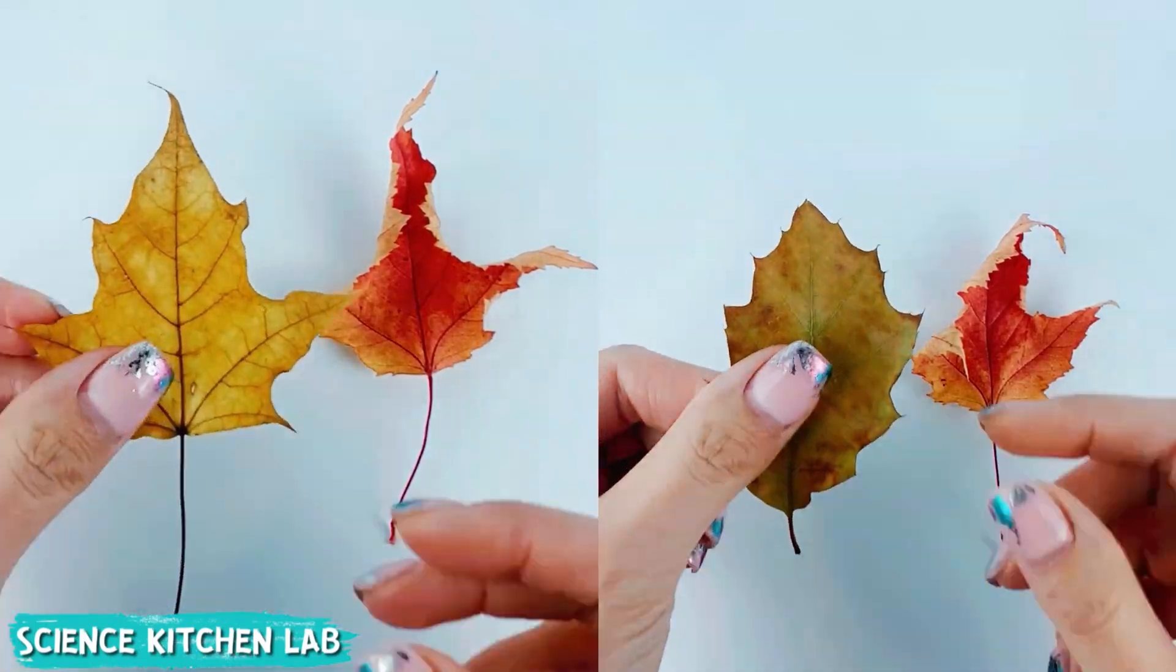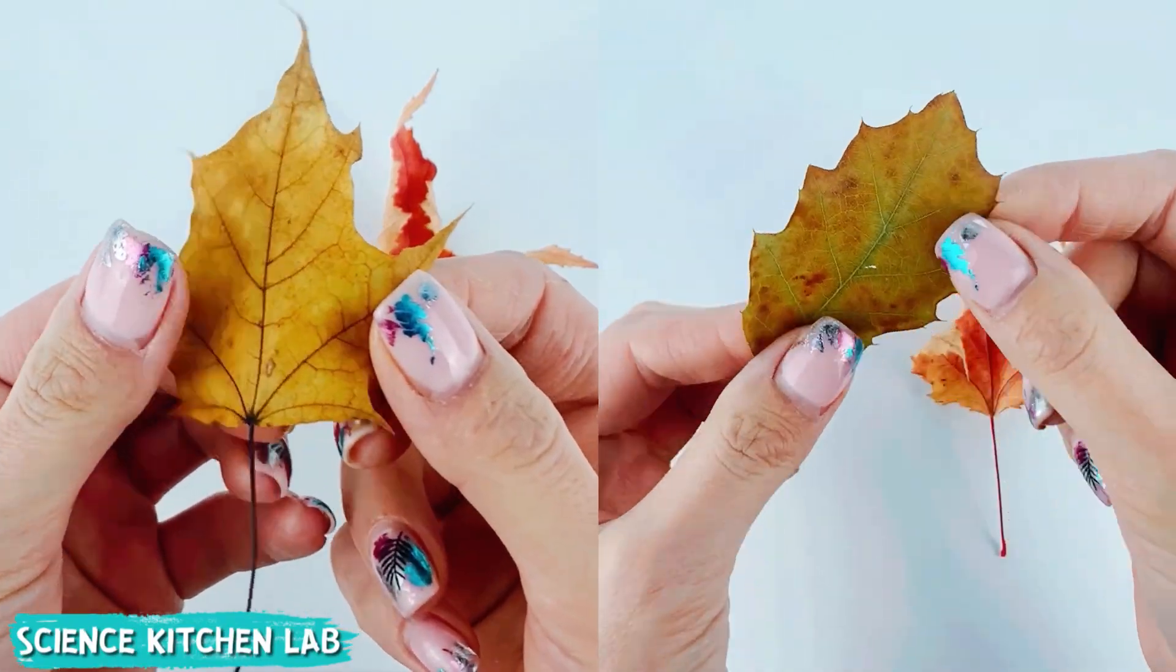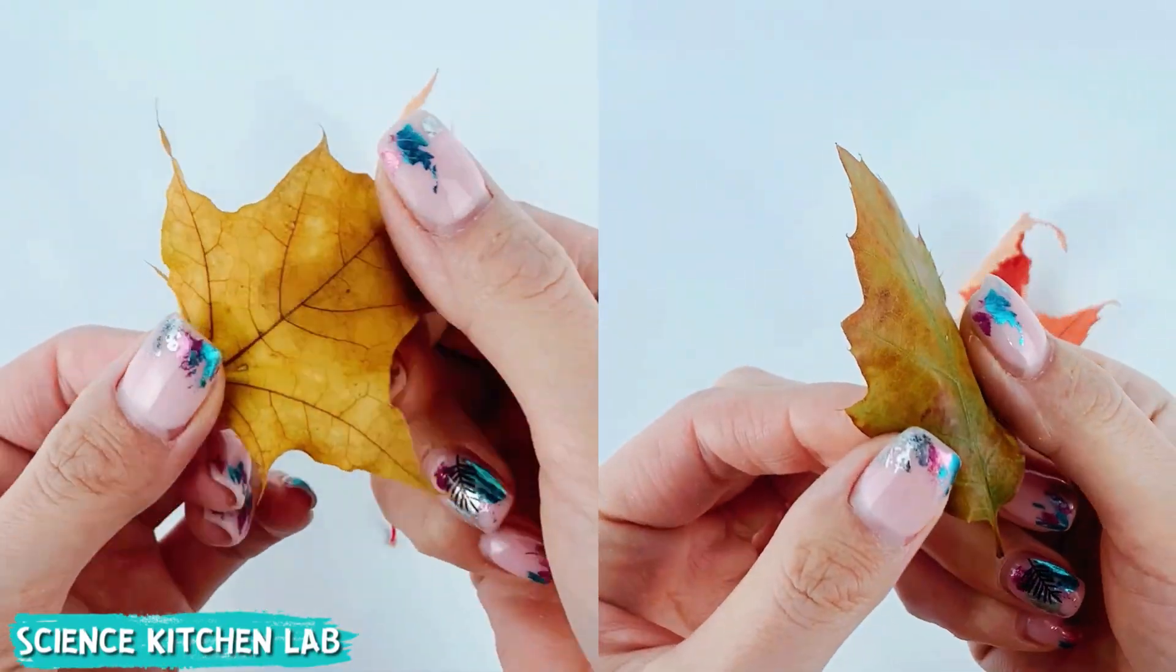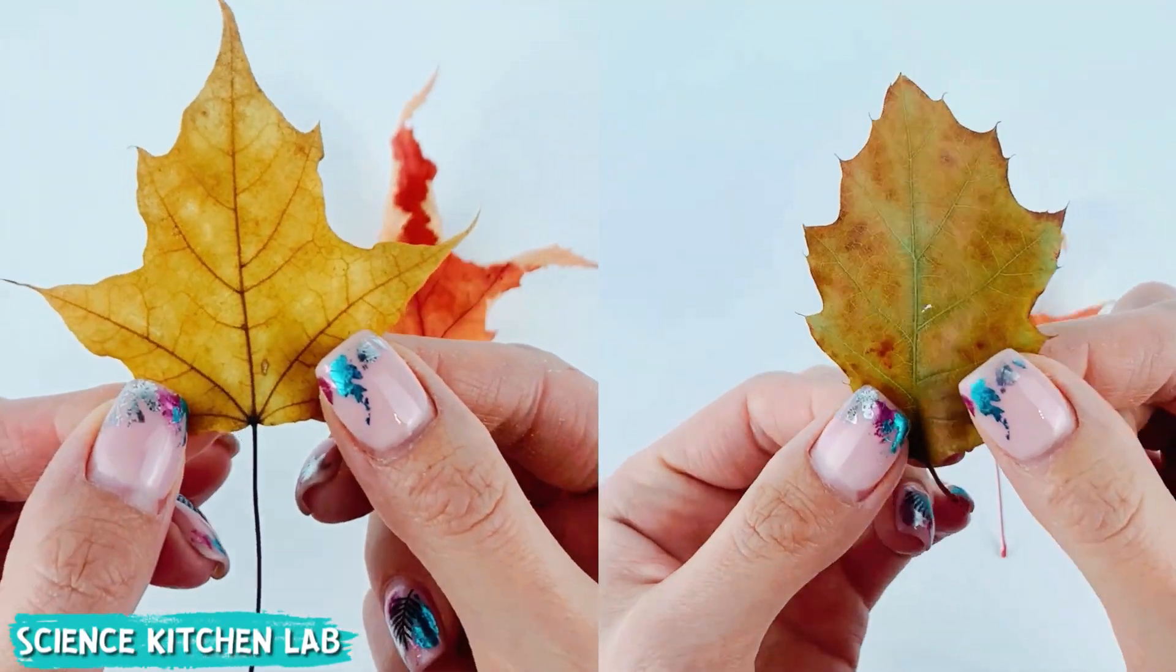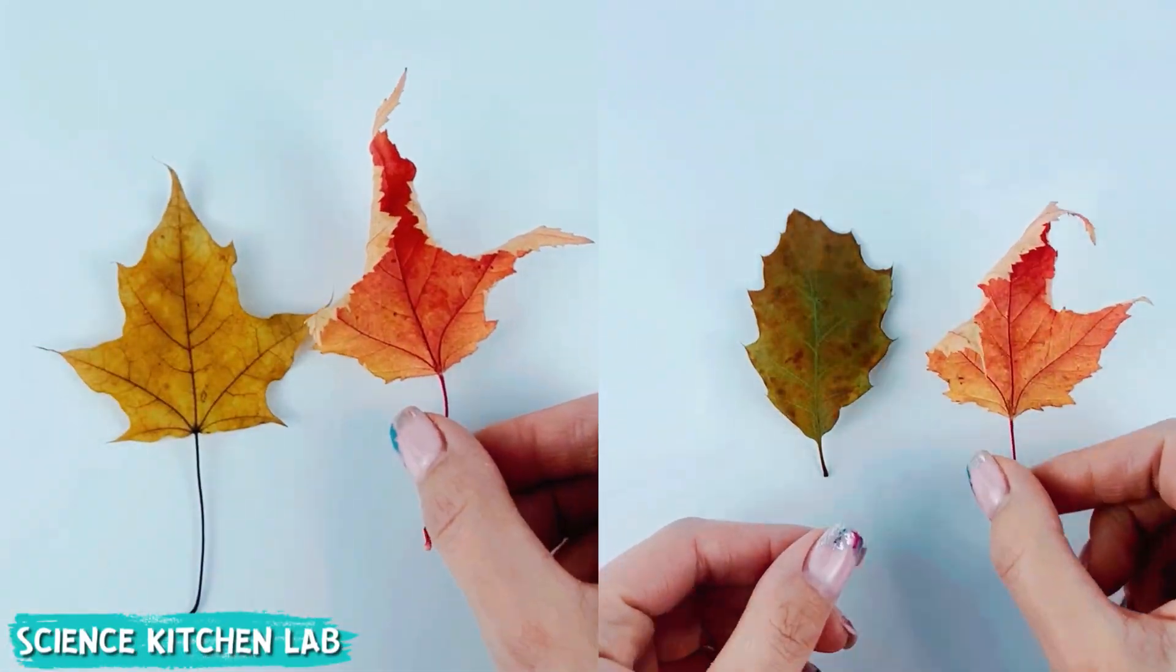Let's try out the recipe for perfect leaf preservation using glycerin. After a few days these leaves won't dry out or become brittle compared to regular leaves. They'll remain soft and flexible.